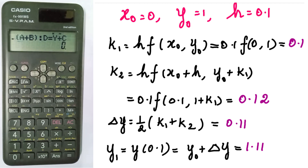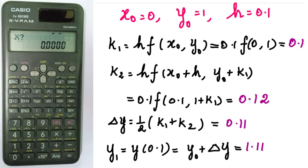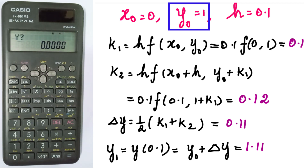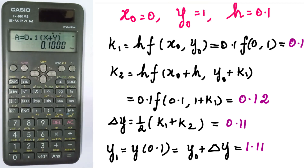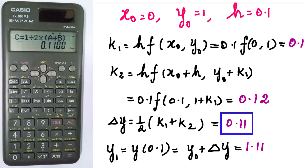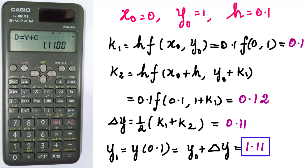For the first step, we calculate y₁. Press the button and enter x = x₀ = 0, then enter y = y₀ = 1. Execute to get A (K₁), again for B (K₂), again for C (delta y), again for D (Y₁). D represents y₁, that is y(0.1), and the answer is 1.1100.